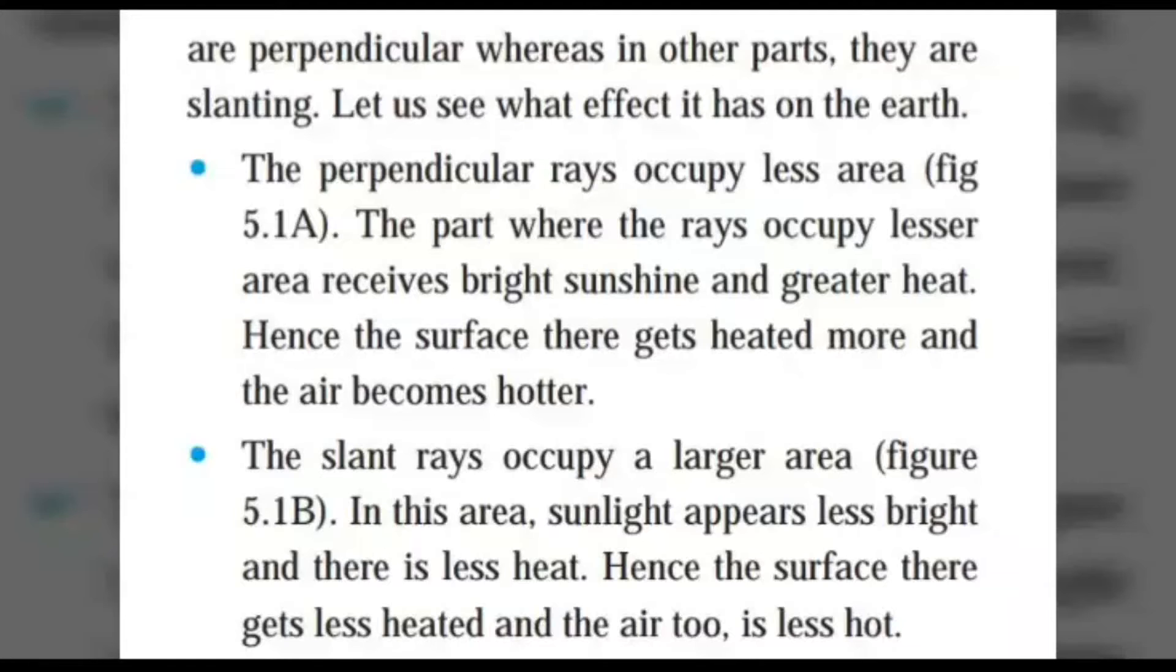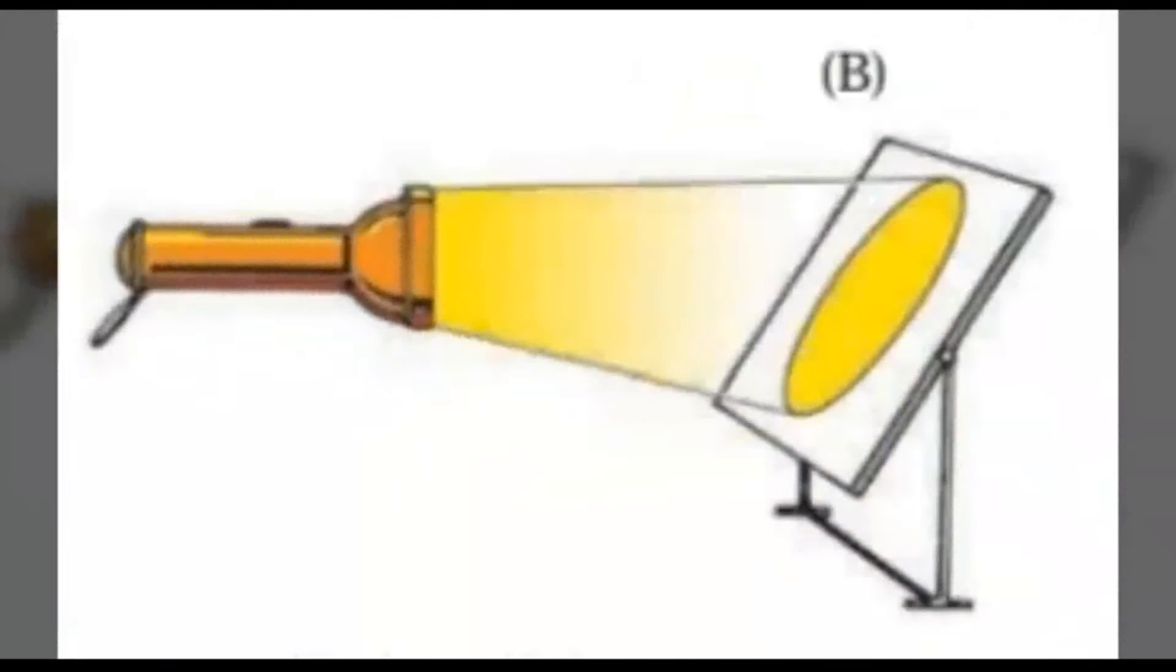Figure 5.1b. In this area, sunlight appears less bright and there is less heat. Hence, the surface there gets less heated and the air too is less hot.